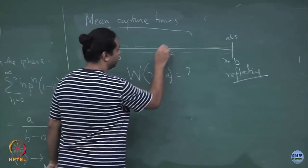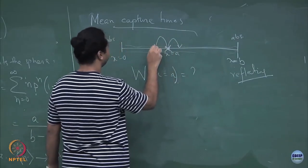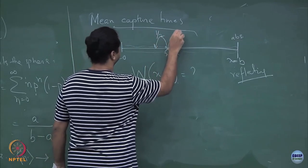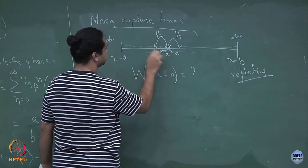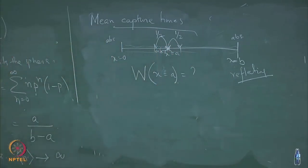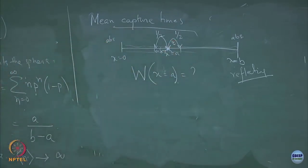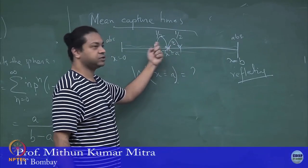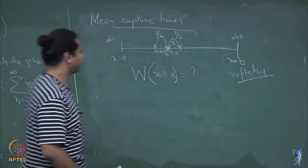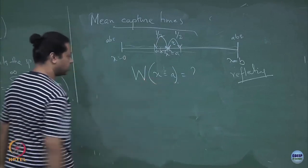I will calculate using the random walk language. This random walker can hop to the right or to the left with probability one half. Each hop it covers a distance delta, so it is walking on a lattice. Each hop takes a time tau. So it is a random walker that takes a step every tau units of time, and each step moves it delta distance to the left or delta distance to the right.